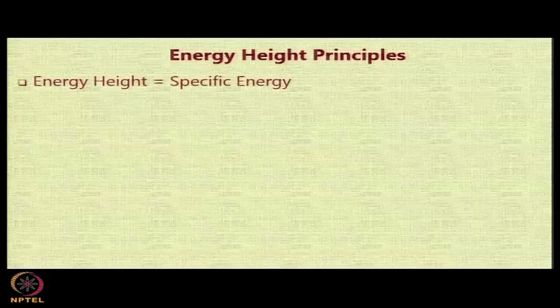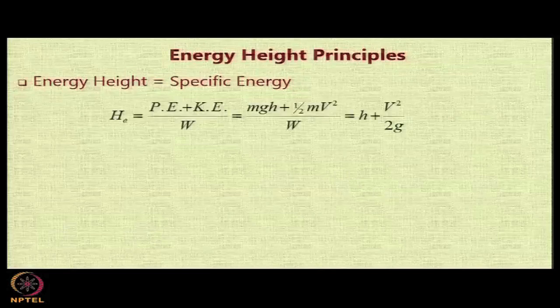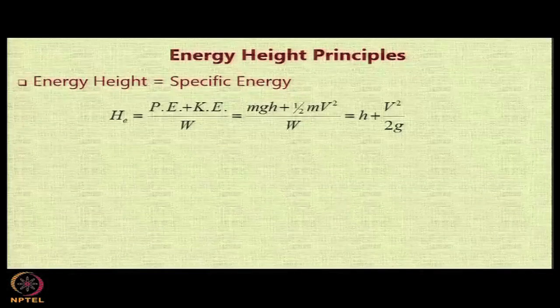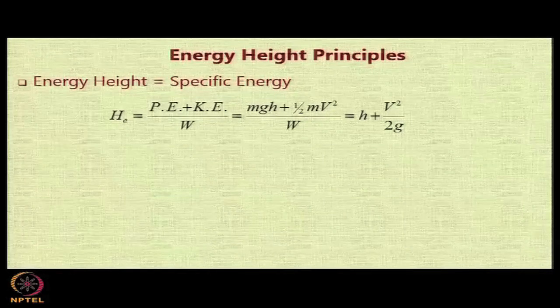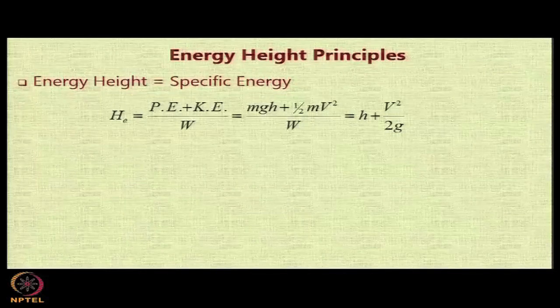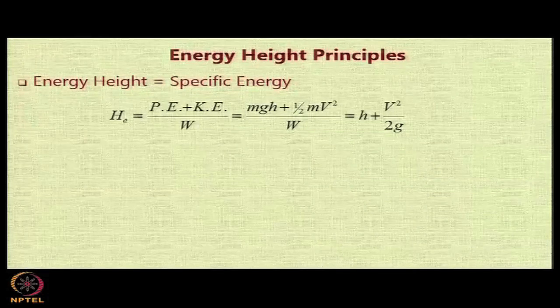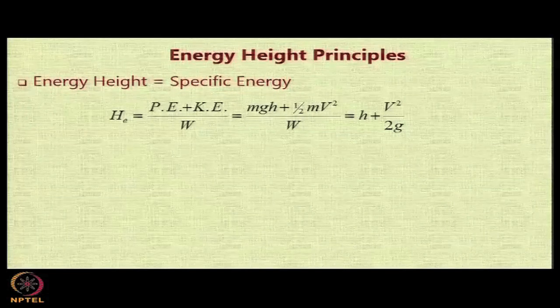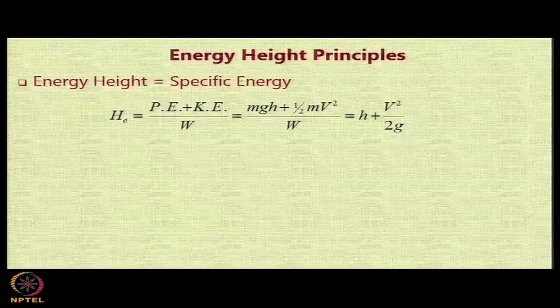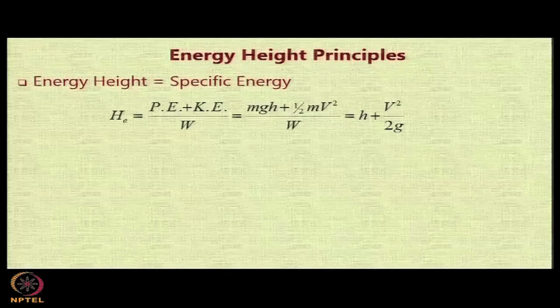The energy height basically is specific energy or the excess energy divided by the aircraft weight. The energy that an aircraft possesses is the summation of the potential energy and the kinetic energy, that is mgh and half mv squared. When you divide that by aircraft weight you get specific energy. W is equal to basically mg, so if you do a simple algebraic manipulation, the specific energy turns out to be h and v squared by 2g.